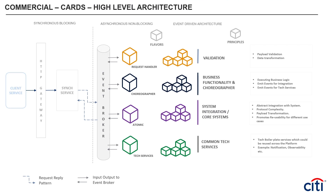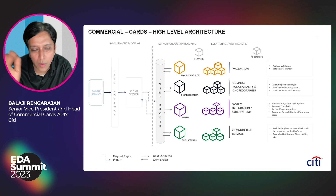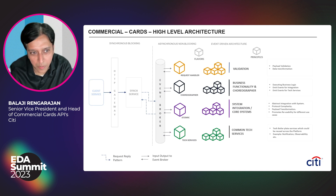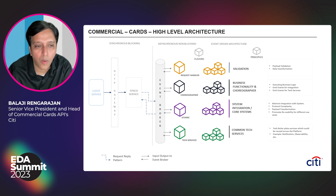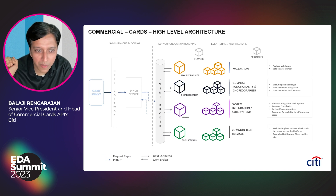This is the high-level architecture of the commercial cards API platform. I'll begin by explaining how an API request flows in from left to right, and then explain the components on the right side of the event broker. Typically, a client service initiates an HTTP request, a gateway intercepts it, and the request is forwarded to the sync service. From the sync service, the interaction begins with an event broker. The pattern being followed here is request-reply — a request is initiated to the event broker and then the sync service is waiting for a response coming back.